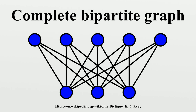A complete bipartite graph K(m,n) has m^(n−1) · n^(m−1) spanning trees. A complete bipartite graph K(m,n) has a maximum matching of size min(m,n). A complete bipartite graph K(n,n) has a proper n-edge coloring corresponding to a Latin square.